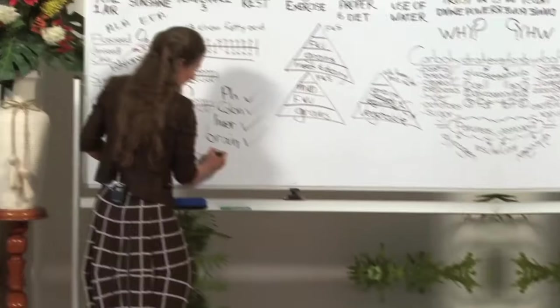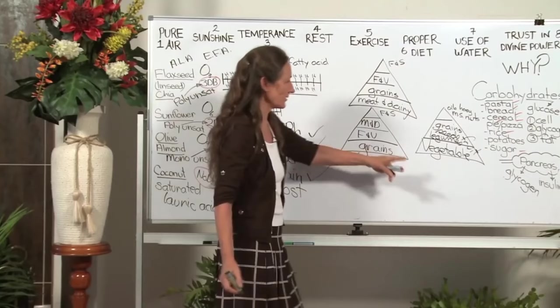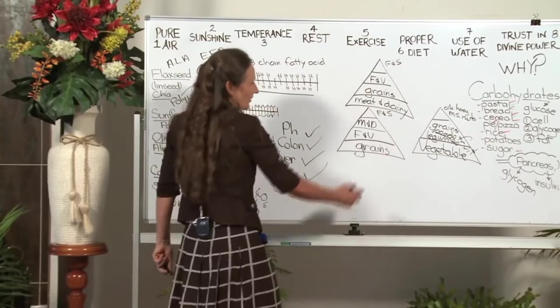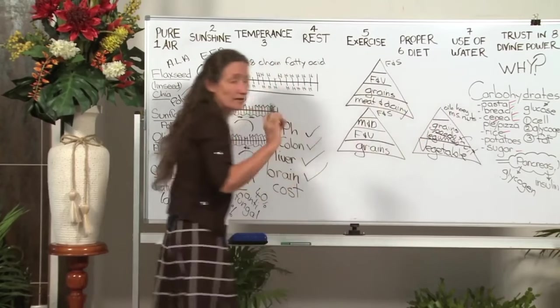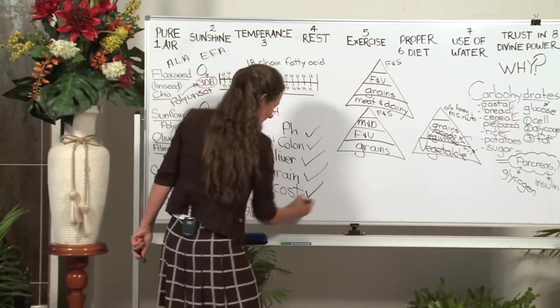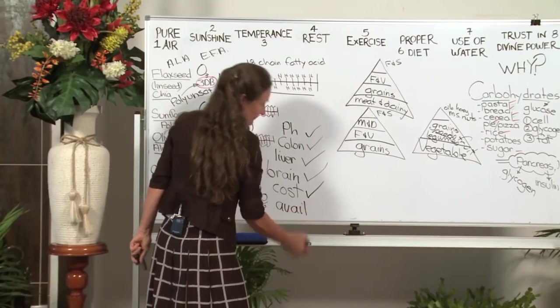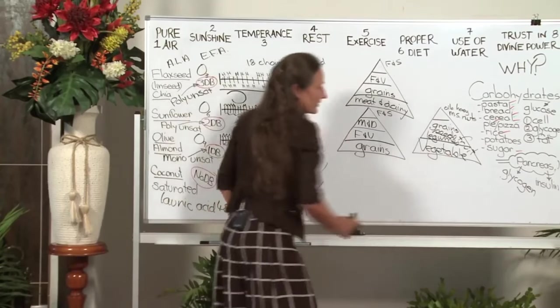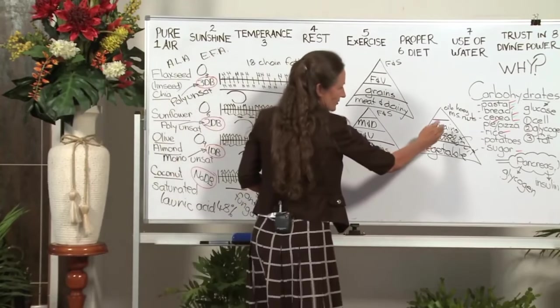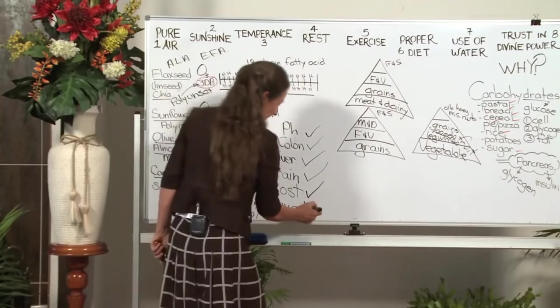What about cost? What's your cheapest food in this triangle? It is your vegetables. Your concentrated foods are the most expensive, but you only need a little bit of them. So cost-wise, it gets a tick. What about availability? There's always fresh fruit and vegetables available. And your legumes, your seeds can all be stored. So we get a tick again.